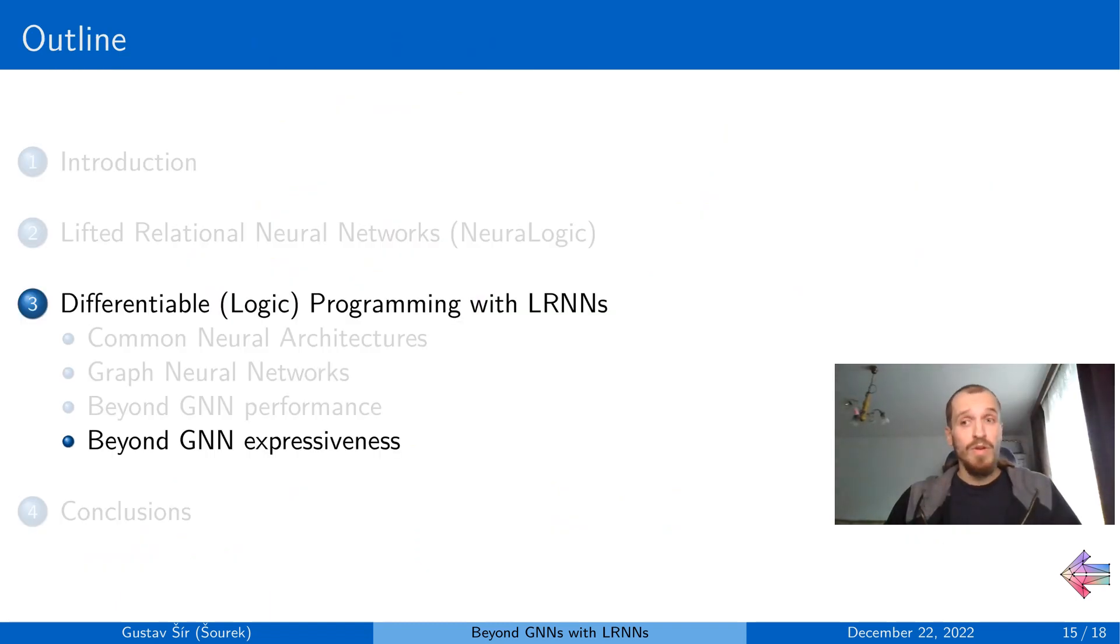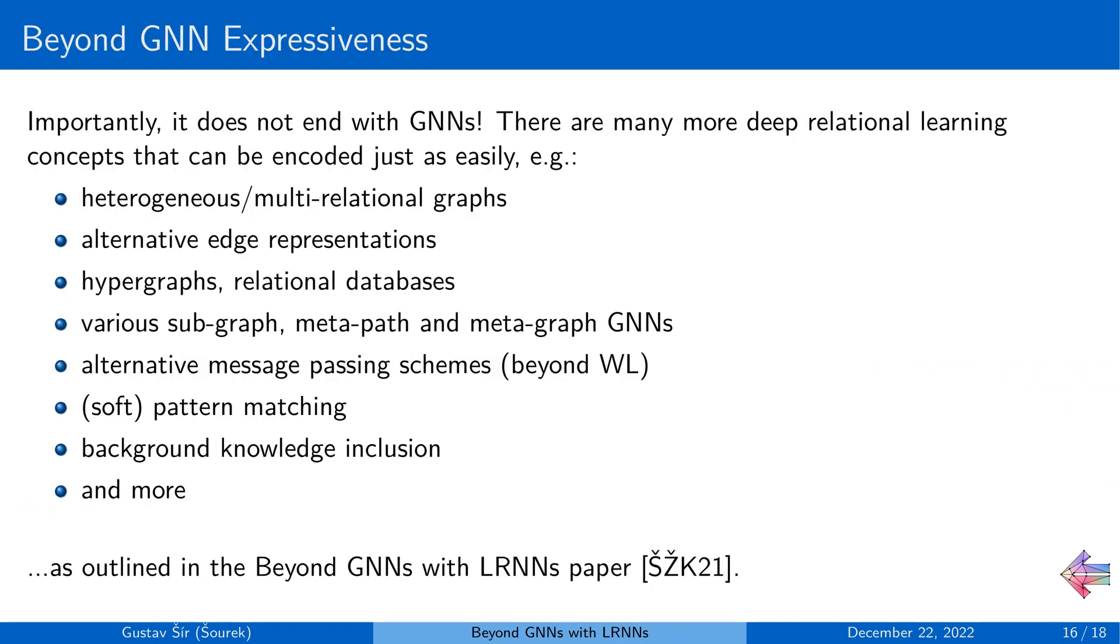So that was improving performance of the GNN models, but that's really just a side story, because the main part is the increased expressiveness the framework allows. Because while you can encode any GNN model in the framework, it is by no means limited or even optimized for this existing model class. It is thanks to the underlying relational logic formalism, which is highly expressive, you can do much more than just climbing edges in a graph, which is what the GNNs do.